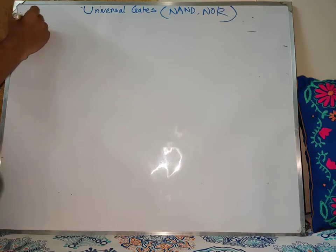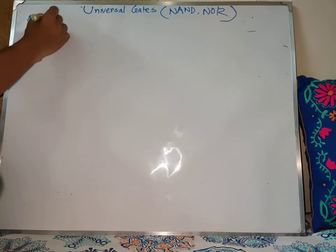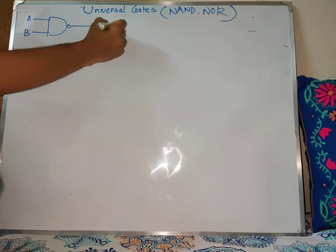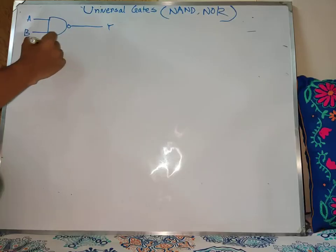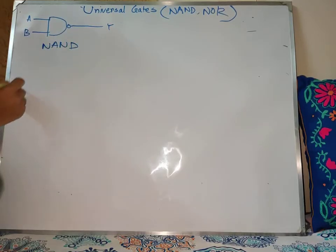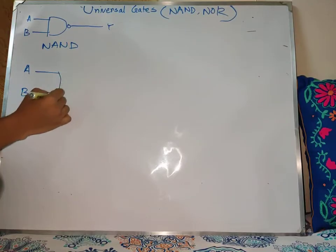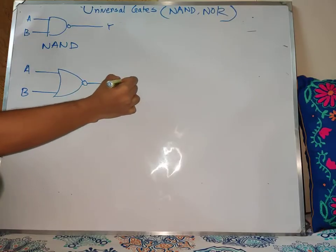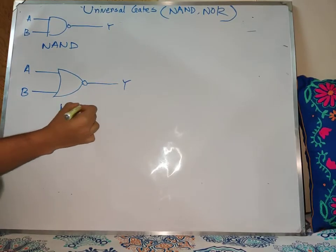So, I will draw the NAND gate symbol. With inputs A and B, this is a 2-input NAND gate. If you look at the 2-input NAND gate, this is the figure of the NAND gate.